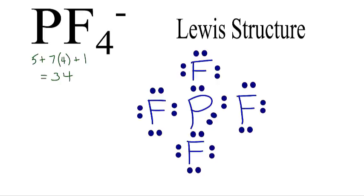So now that central phosphorus does have 10 valence electrons, but that's okay. If we calculate the formal charges, we'll see that everything works out. We will have a negative charge on that central phosphorus, which makes sense because PF4 is a negative molecule. It is an ion.